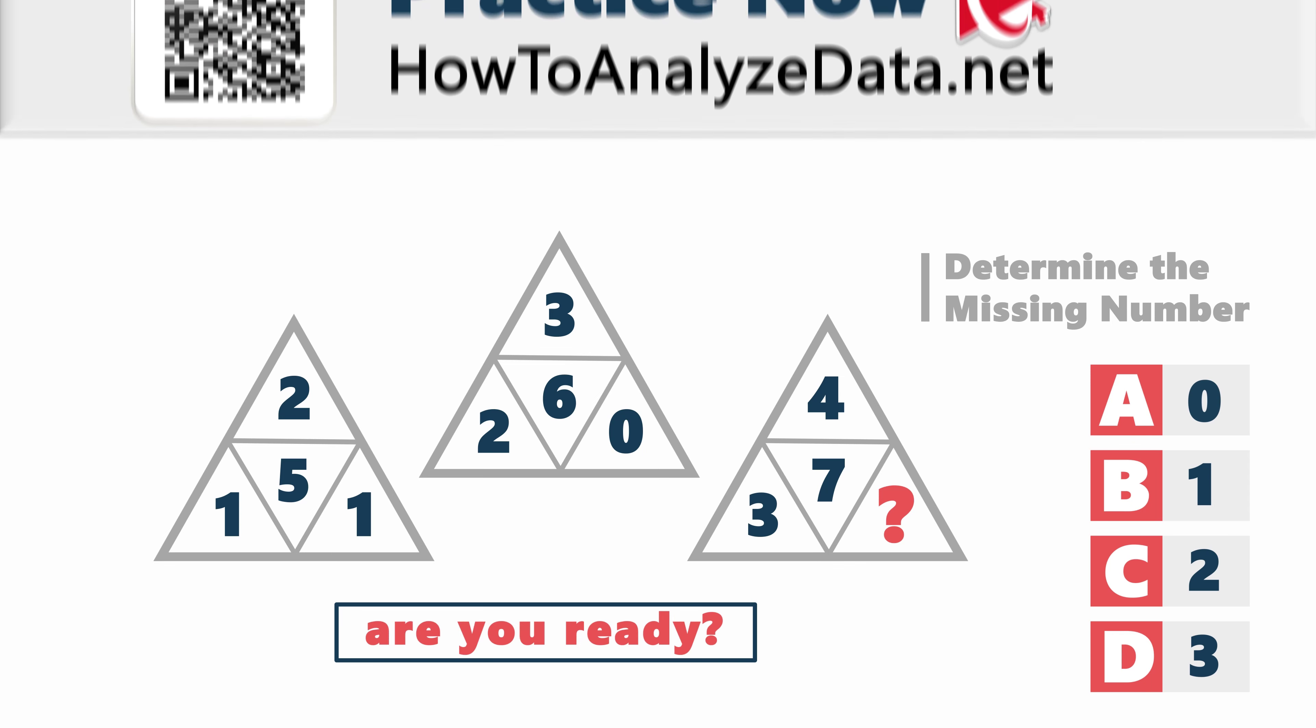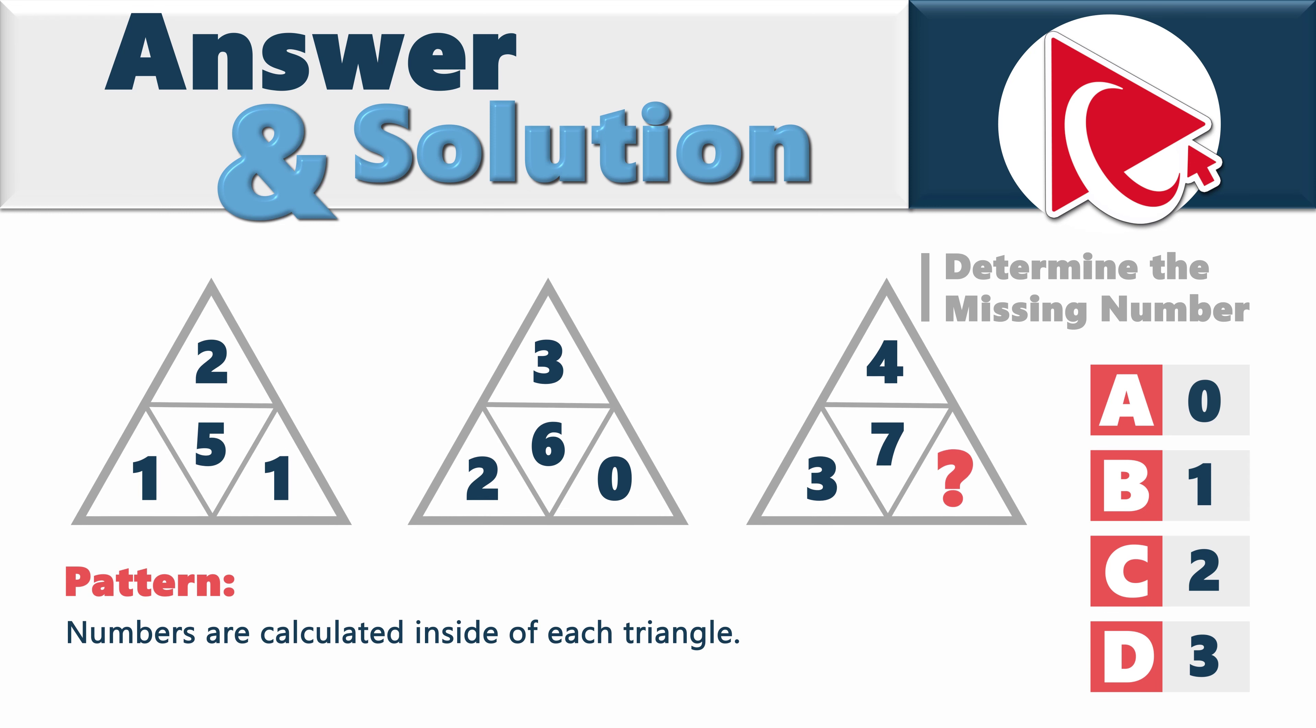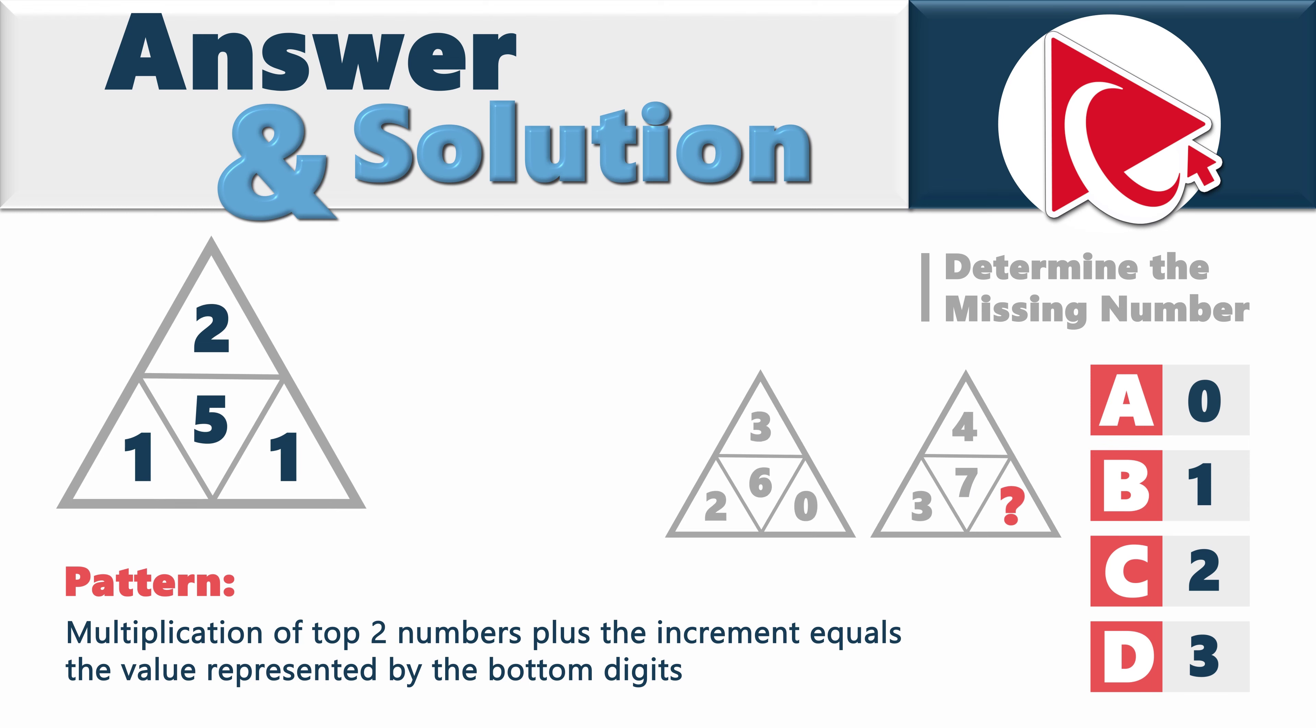Are you ready with your solution? I'm sorry, I couldn't resist and I tried to trick you. I hope you didn't fall for it. The numbers here are calculated inside of each triangle, not across the triangles. In fact, the pattern here is that multiplication of top two numbers plus the increment equals the value represented by the bottom digits. For example, in the first triangle, the numbers 2 multiplied by 5 plus 1 equals 11.